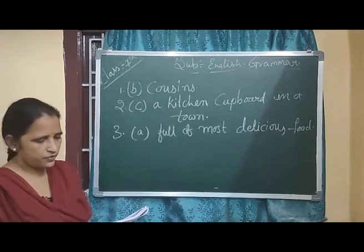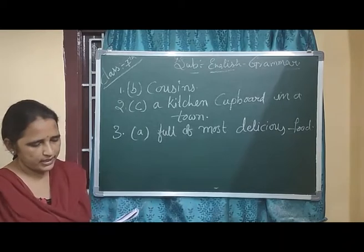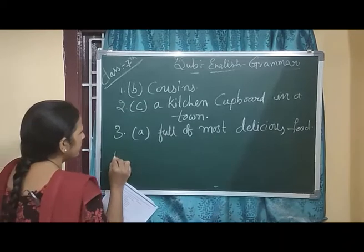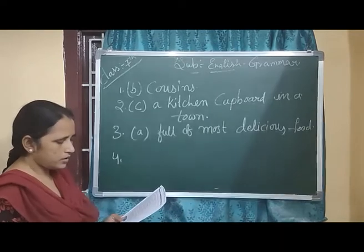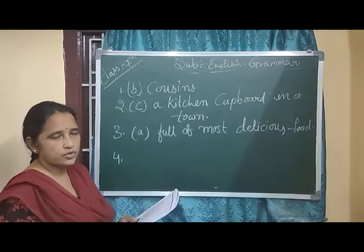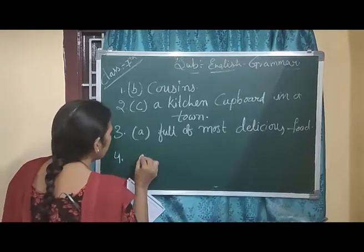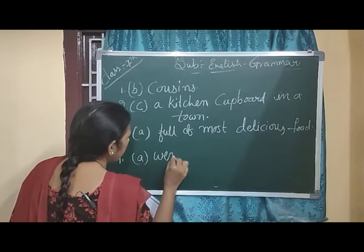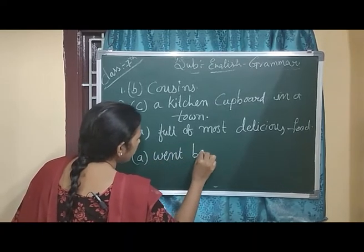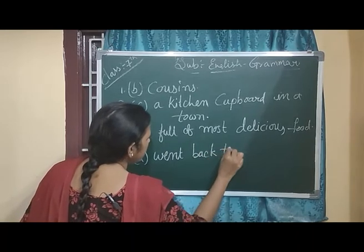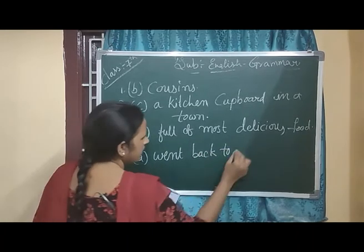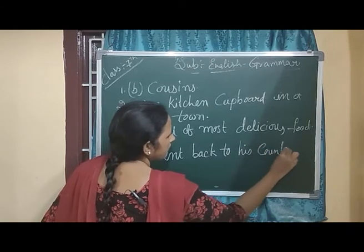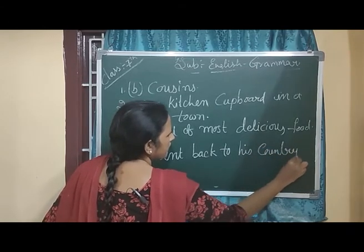Now coming to the fourth question: at the end of the story, where did the country mouse go? It went back to its country. So option A — went back to his country — is the correct answer. This completes the second Roman numeral: choose the best answers.